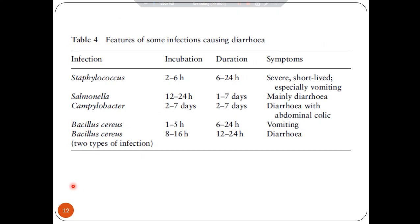Looking at features of some infections causing diarrhea: Staphylococcus causes short-lived symptoms, especially vomiting; Salmonella mainly causes diarrhea; Campylobacter causes diarrhea with abdominal colic; and Bacillus cereus — with an incubation period of 8 to 16 hours — results in diarrhea, while its other form primarily causes vomiting.